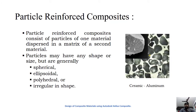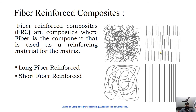In a particle reinforced composite, particles are used to reinforce the matrix phase instead of fibers. For example, aluminum particles can be embedded inside a ceramic matrix. The particles may have any shape or size, but generally spherical, ellipsoid, or irregular shaped particles are embedded into the composite.